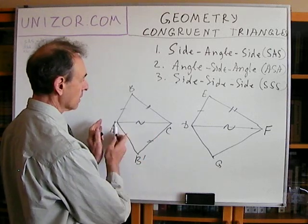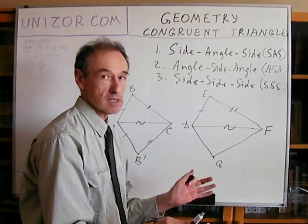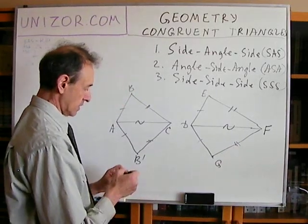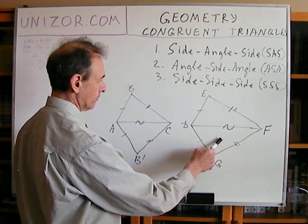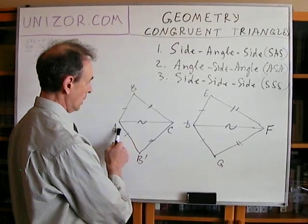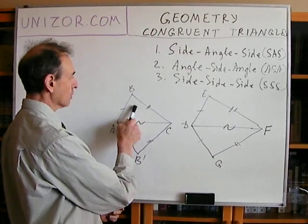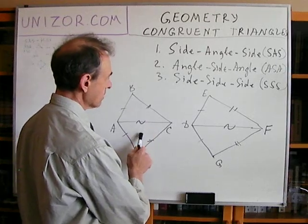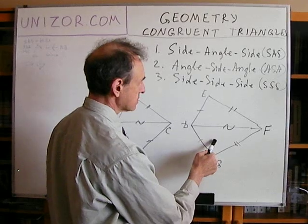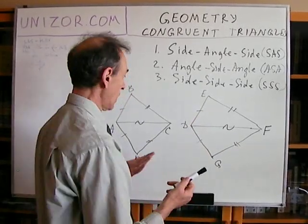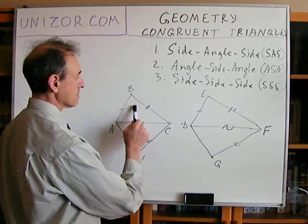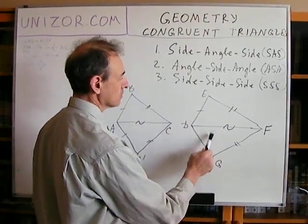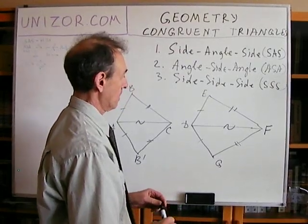Since segment AC is congruent to segment DF, my point C will coincide with F, and B' will move somewhere into location G. Since I move this triangle AB'C into this location it's again a non-deforming transformation. So triangle GFH is congruent to AB'C, which in turn is congruent to ABC. Since this is congruent to this and this is congruent to this, it is sufficient to prove the remaining congruence.